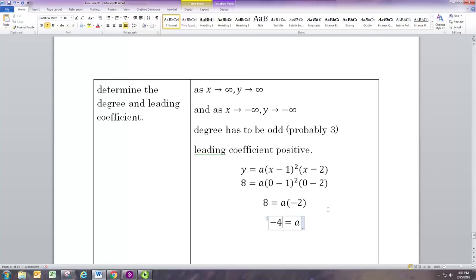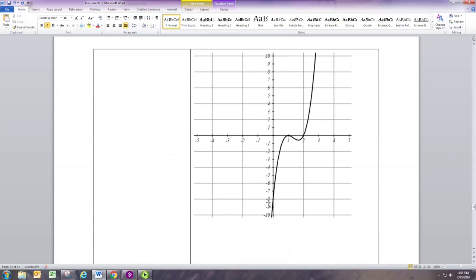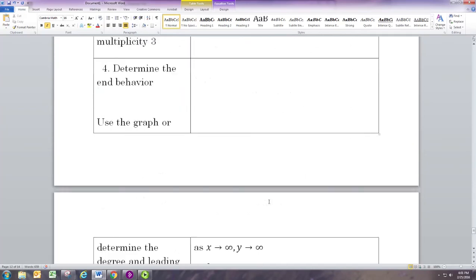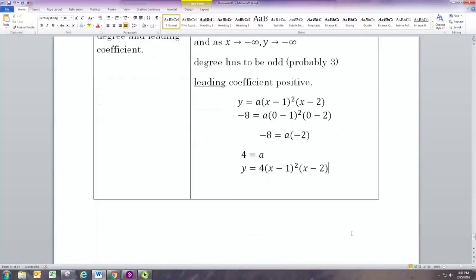Wait, I'm pausing here because we know that the leading coefficient is positive, so a can't be negative 4, right? The mistake was that the y-intercept was not at 8, the y-intercept was at negative 8. So we needed to put negative 8 in there, and that would give us positive 4. So we can now write the equation out based on the information we have: y equals 4(x-1)²(x-2). The graph of this will look very much like the graph you see above, because that's probably the original equation.